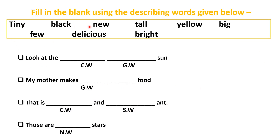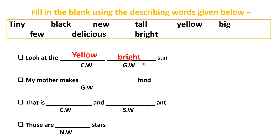Now fill in the blanks using the describing words given below. Some words are given, and we have to use color words and general words. For example: 'Look at the dash and dash sun.' The color of the sun is yellow, and a general word describing the sun would be 'bright.' So: 'Look at the yellow, bright sun.'